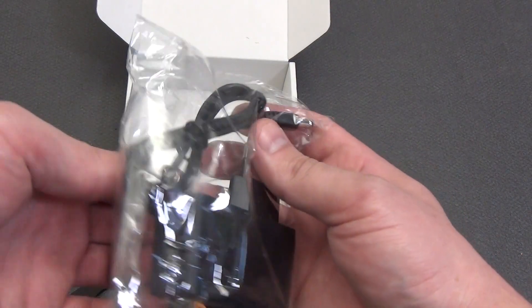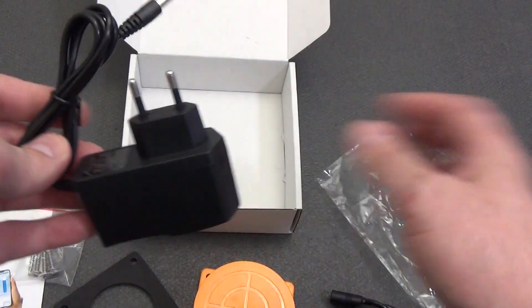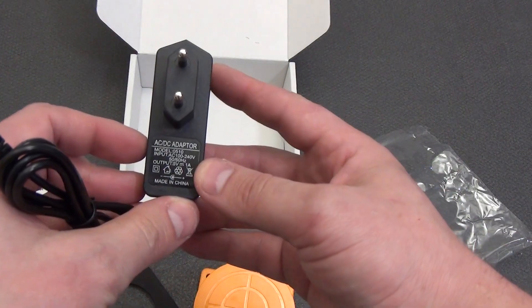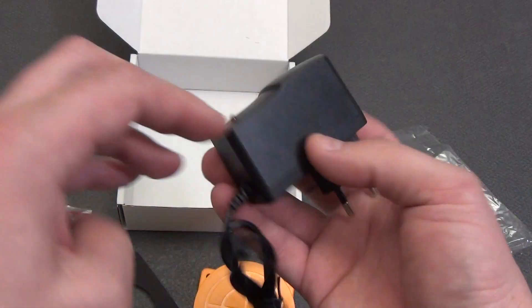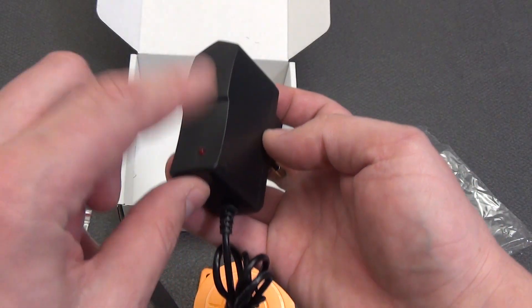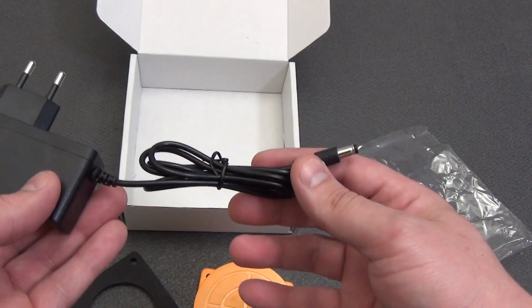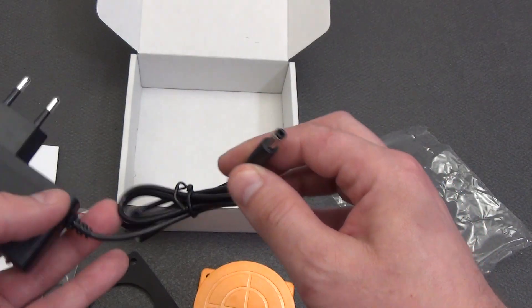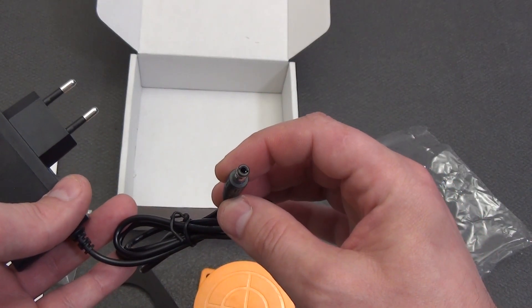In a separate bag there are 4 self-tapping screws for attaching the sensor to the container. The power supply for the device is in a separate bag. The power supply with a European plug produces 5 volts and a current of 1 ampere. There is an indicator LED, when connected it lights up red. The cable length is 1 meter, the plug can be called a standard 5.5 by 2.5.